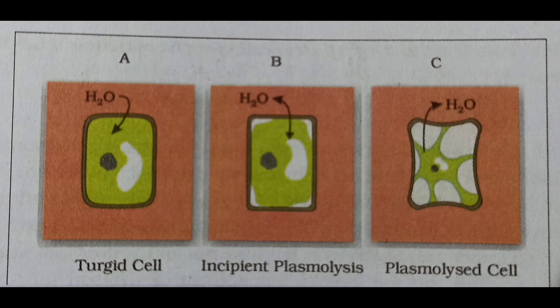Carefully observe this figure. This is what we call plasmolysis. When we place the cell in a hypertonic solution, initially the plasmolysis is indicated by the shrinking of the protoplasm, leading to the separation of the plasma membrane from the cell wall at the corners. This stage is called incipient plasmolysis.